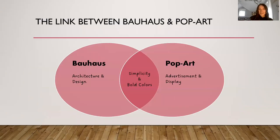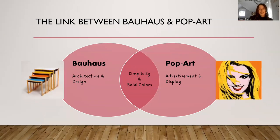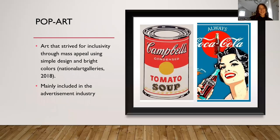This simplistic colorization led into pop art. While Bauhaus had the architecture and design, and pop art had the advertisement and display, they both had simplicity and bold colors. Leading into pop art, this was a movement that strived to create inclusivity through mass appeal, and they did this through simplistic design — not too keen on the details, but with really simple colors.